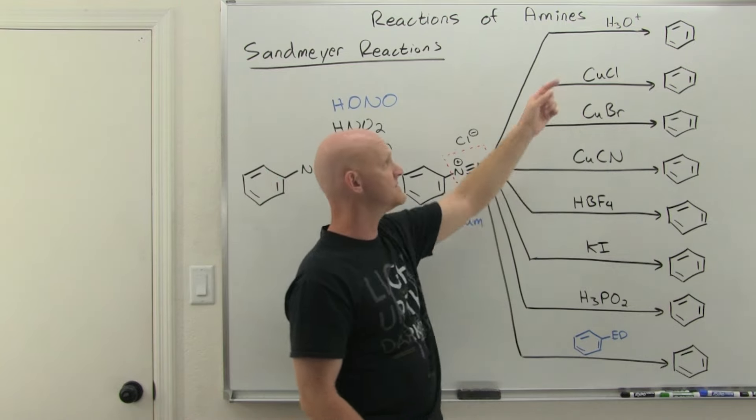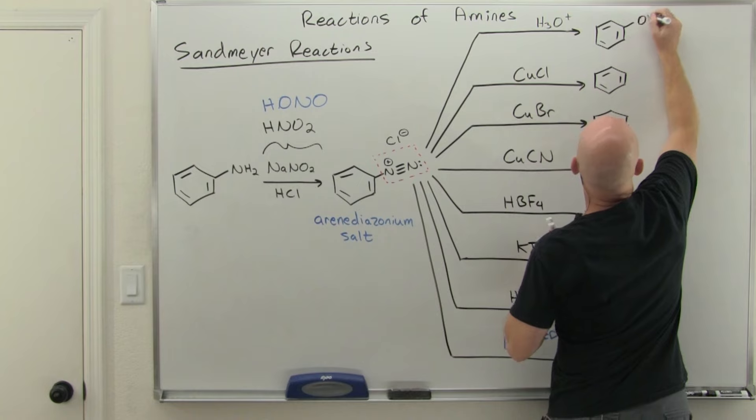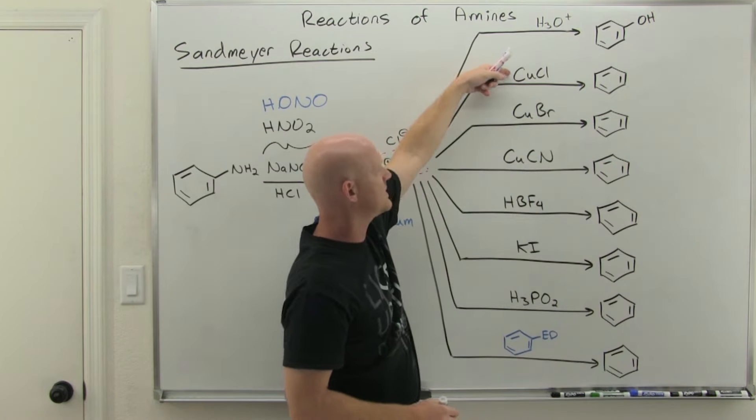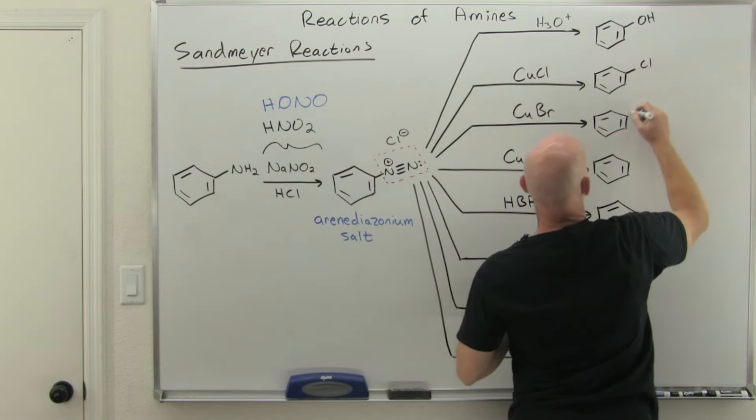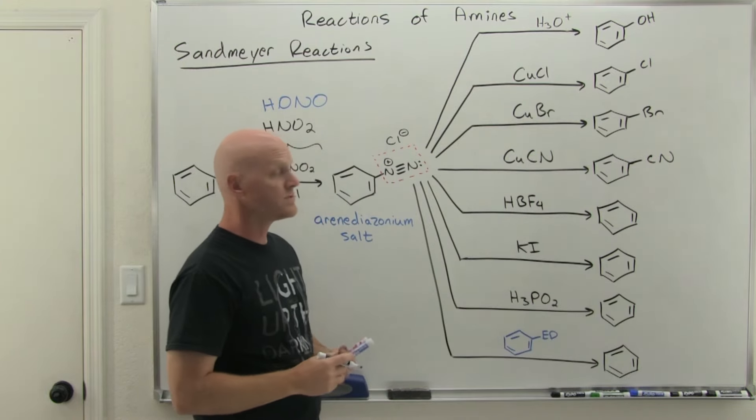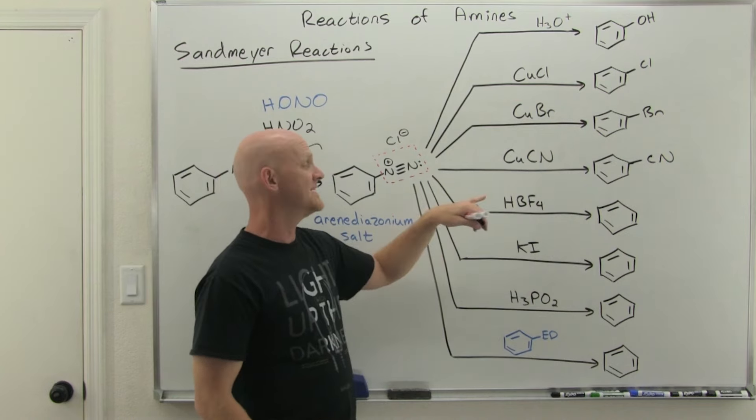Now with H3O+, you're just going to end up replacing it with a hydroxyl group to get a phenol. So what's nice about these next three copper salts: CuCl replaces it with chlorine, CuBr with bromine, CuCN with cyanide. So those are easy to remember. We also can do the other halides, fluoride and iodide as well. For fluoride though, it's not CuF, it is HBF4.